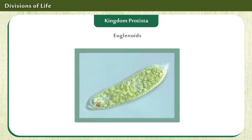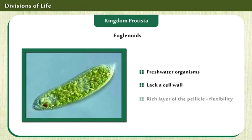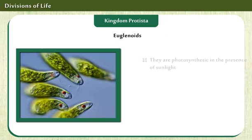Euglenoids are classified under Kingdom Protista. They are freshwater organisms. They lack a cell wall and have a rich layer of the pellicle, which accounts for their flexibility. Some of their features are displayed on the screen.